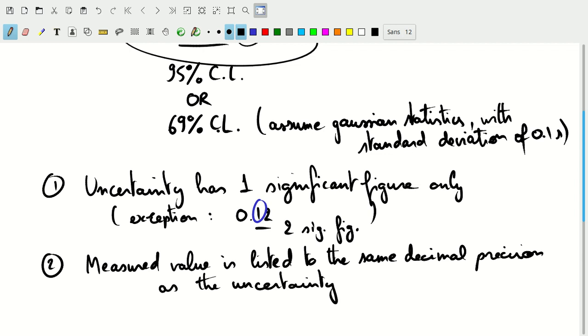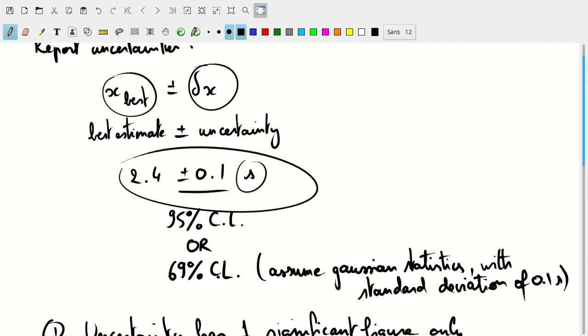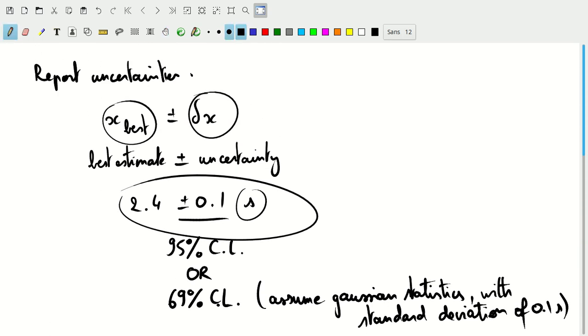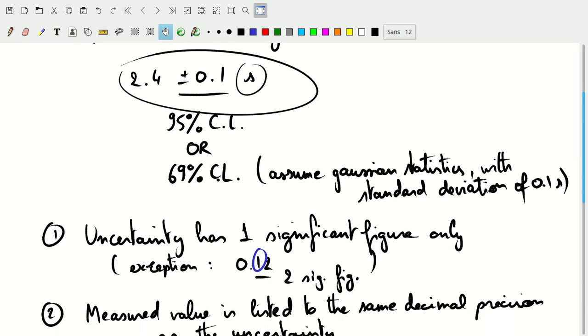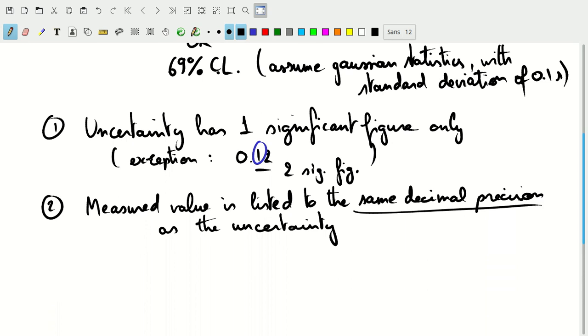Notice that in this case here, since the uncertainty was 0.1, we could have added another significant figure to the uncertainty, but we didn't. We don't have to do that, but we can. The uncertainty is 0.1, and so I listed the main value, 2.4, also just to one place after the decimal point. So the same decimal precision as the uncertainty.